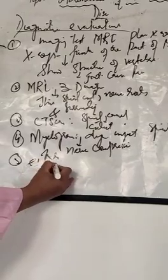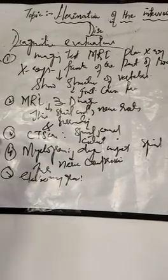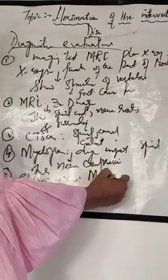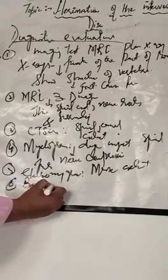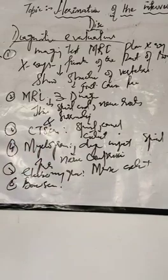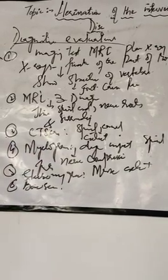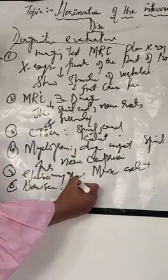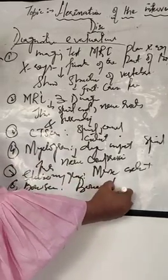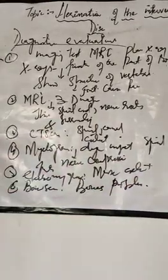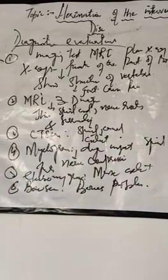The fifth test is an electromyogram, which measures muscle activity. The sixth test is a bone scan, which is an imaging test used to identify bone problems. These are the diagnostic evaluations used for herniated disc disease.